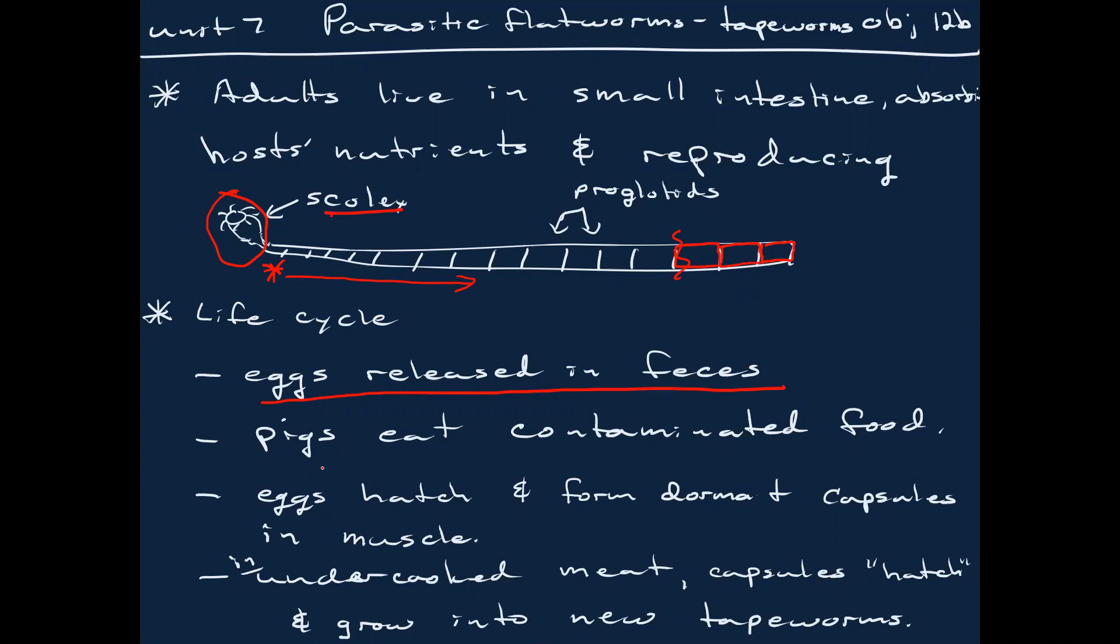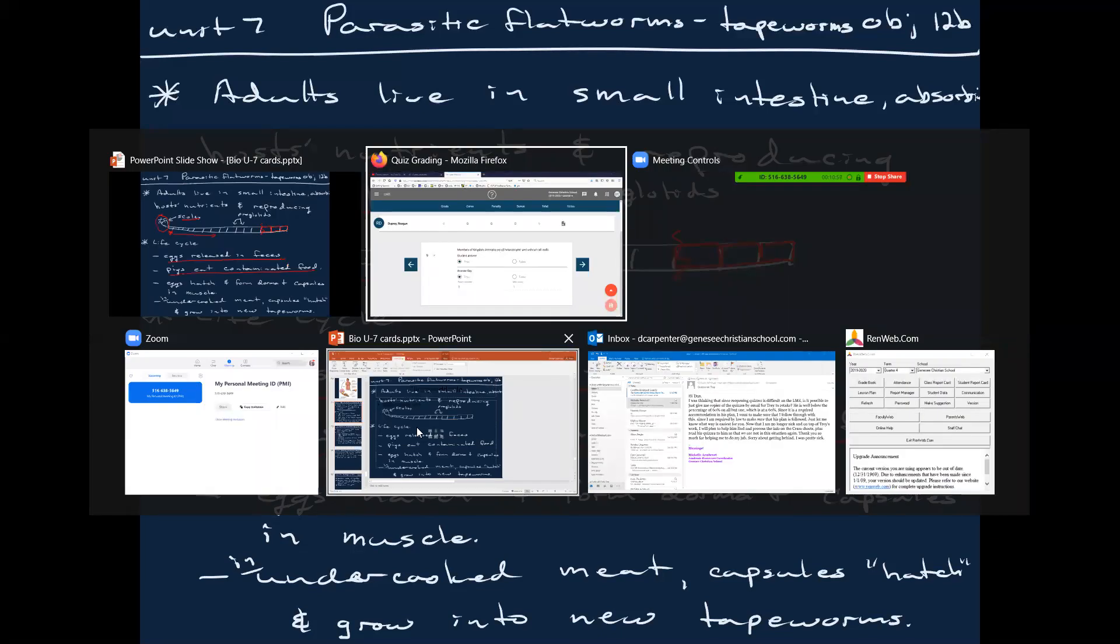So, eggs then are released in the feces by contaminated people. We're talking here about the human tapeworm. Now, what I'm about to say may not make sense to the modern mind, especially the non-farm mind. So, pigs then eat contaminated food. Now, if you're putting two and two together, you've got to ask yourself, wait a minute, pigs eat human feces? And the answer is not on purpose. And not in a modern farm. But, for example, hang on a minute, I've got to get myself a clean slide to draw on here.